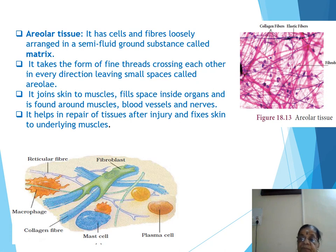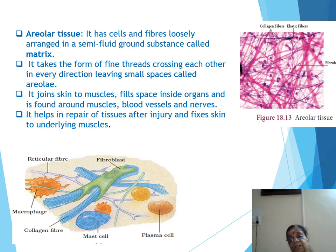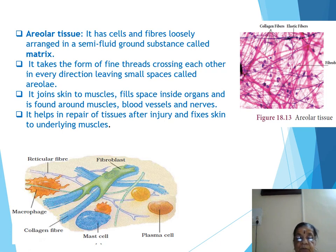Just as for epithelial tissue, for connective tissue you should know the description, location, and function. Location and function are especially important. For example, nerve cells are only in the nervous system, and blood is only in the vascular tissue.